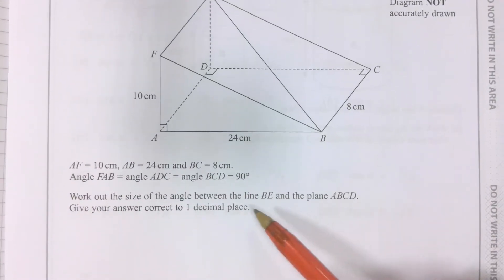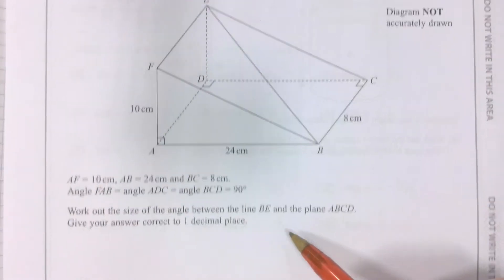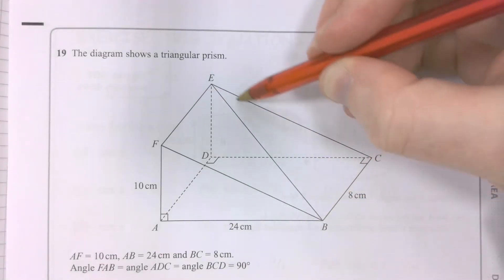Now let's figure out what this information means. The line BE, you can clearly see, there it is.